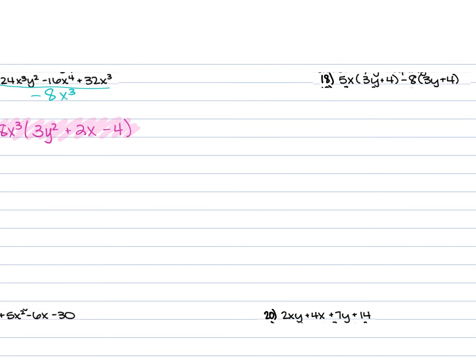For number 18, we have 5x(3y + 4) minus 8(3y + 4). The two sets of parentheses are identical. So rewrite (3y + 4) once and form another set of parentheses with what's in front: the 5x and the negative 8. Final answer: (3y + 4)(5x − 8).